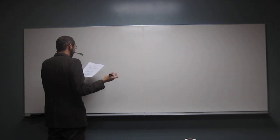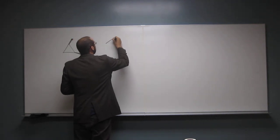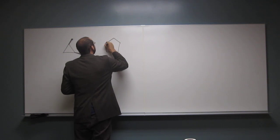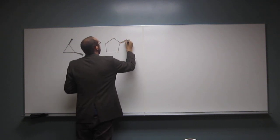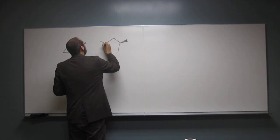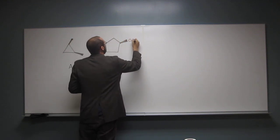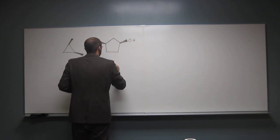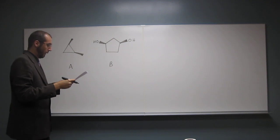and then we can show ourselves definitely which ones possess a plane of symmetry and which ones don't. The next one is cis-1,3-dihydroxycyclopentane. Okay, so cyclopentane.